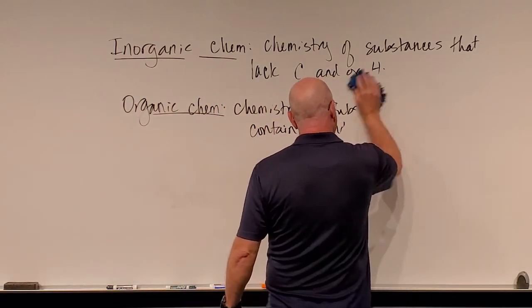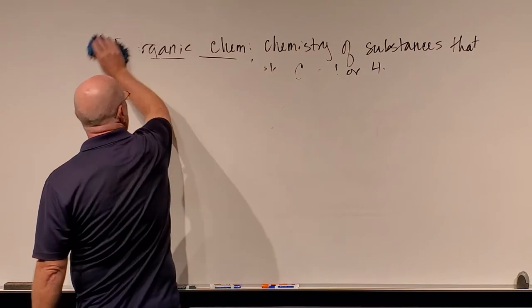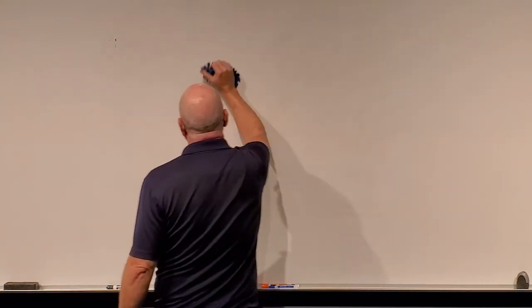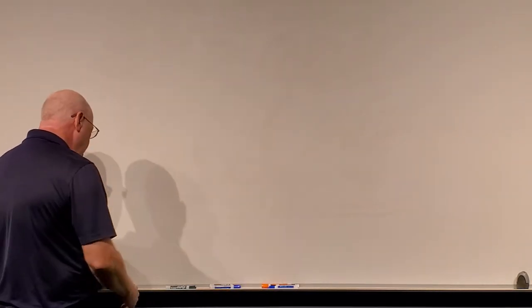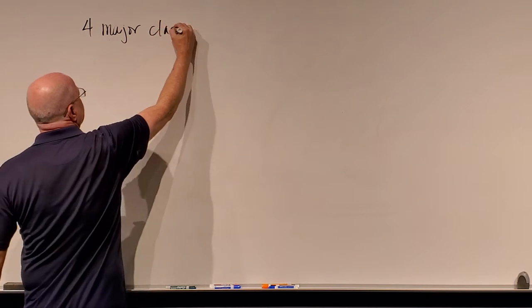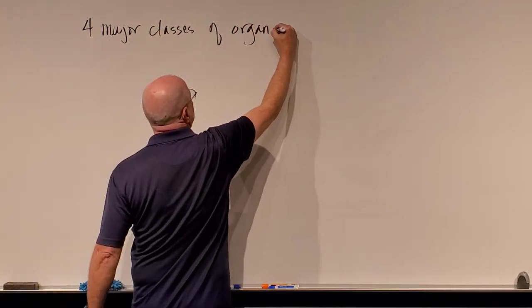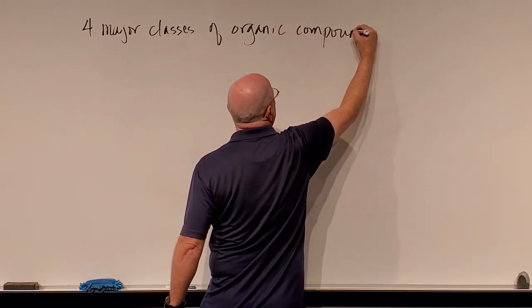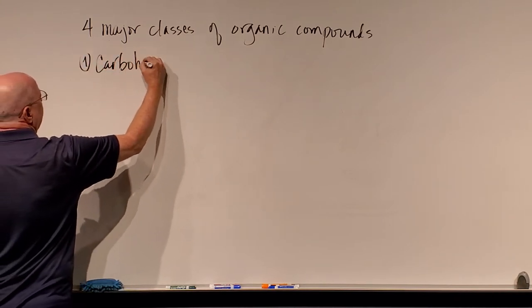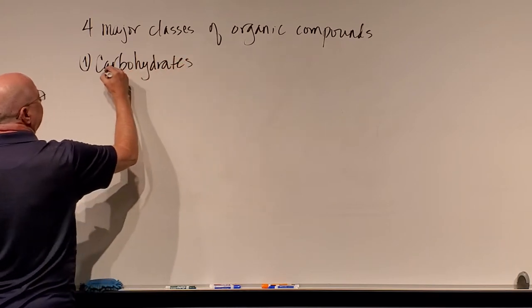When I say 'of the human body,' I'm so used to teaching anatomy and physiology — but all living organisms on Earth are made up of some combination of these four major organic compounds. The first major class of organic compounds that make up living organisms is called carbohydrates. If you look at the name, it tells you it has carbon and hydrogen in it.